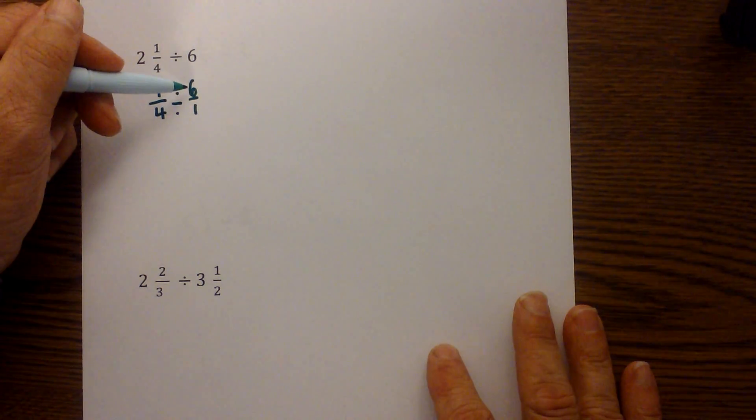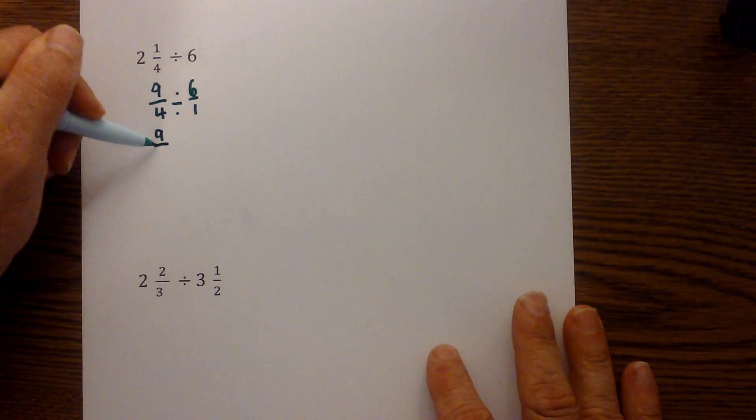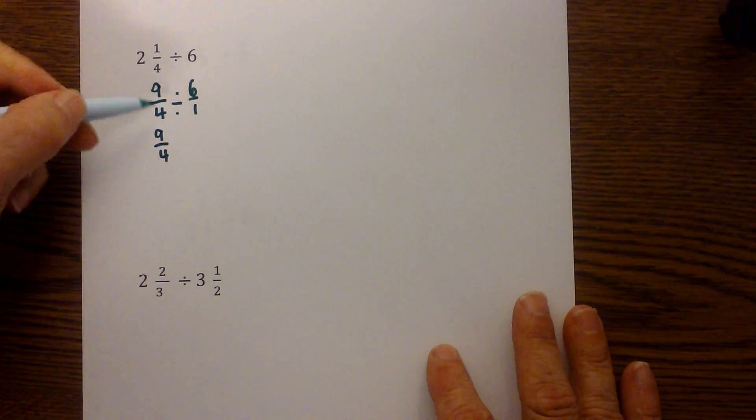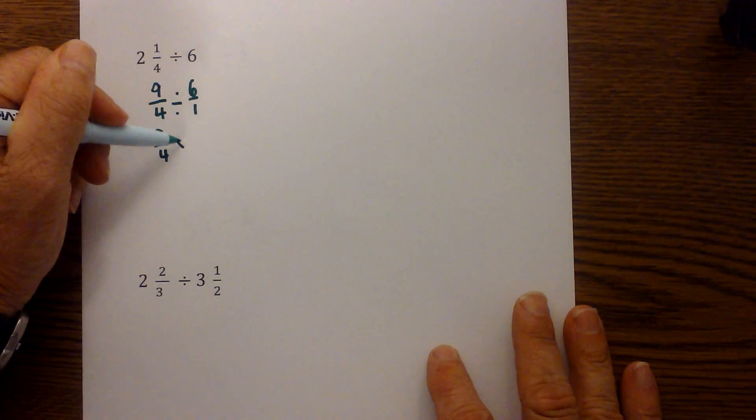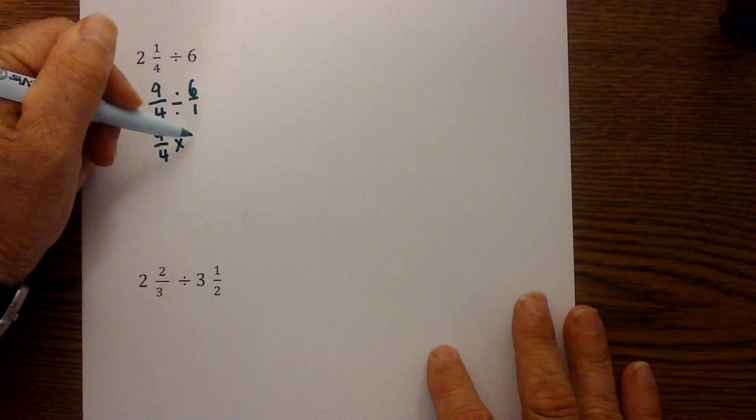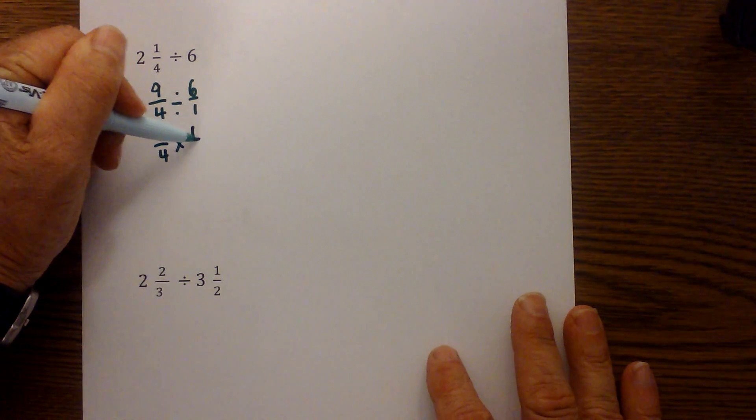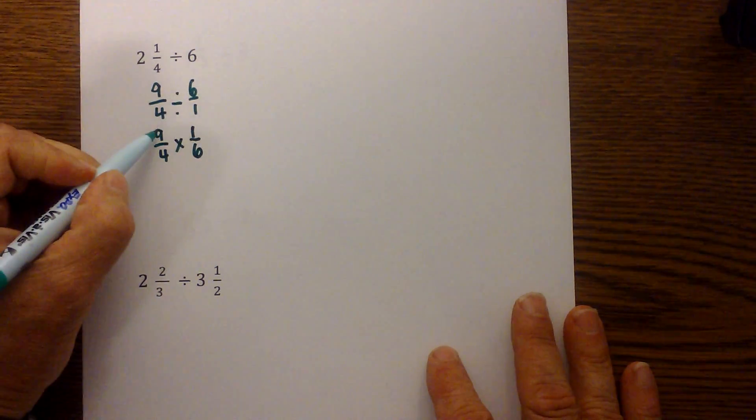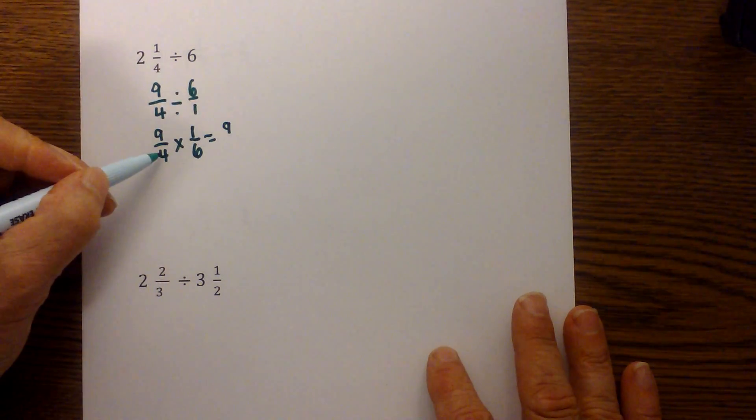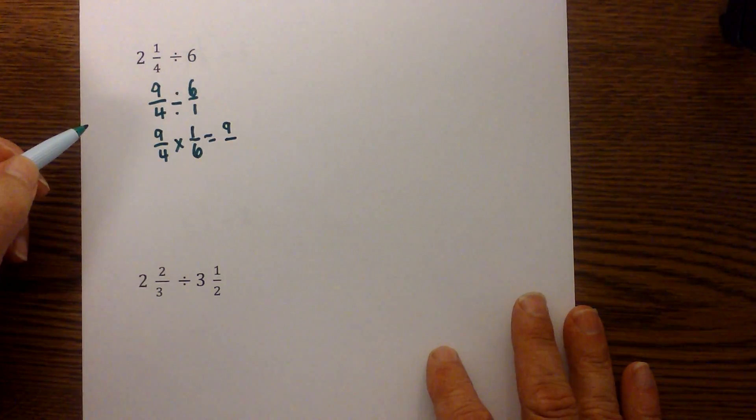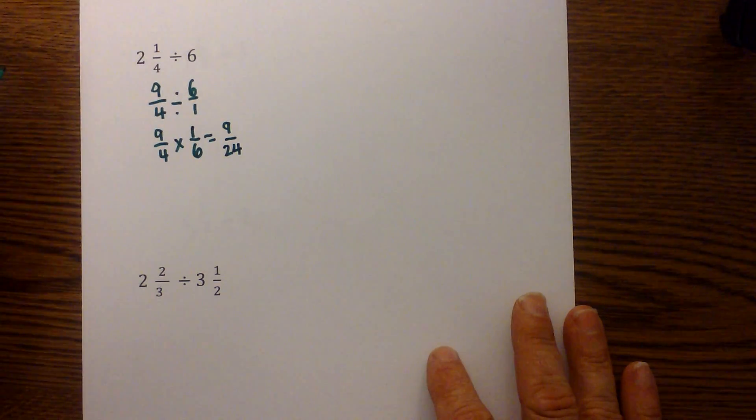I'm then going to multiply. I'm going to change the sign. You keep, change, and flip whenever you divide. I'm going to keep, change the sign, and flip the reciprocal. Flip the 6 over 1 so it will become 1 over 6. I then just multiply the numerators which is 9 and the denominators which is 24. So, we have 9 over 24.